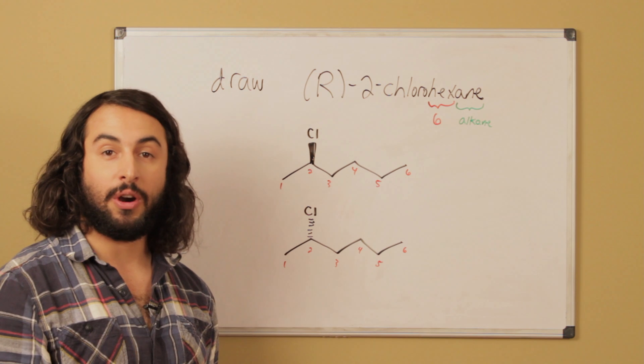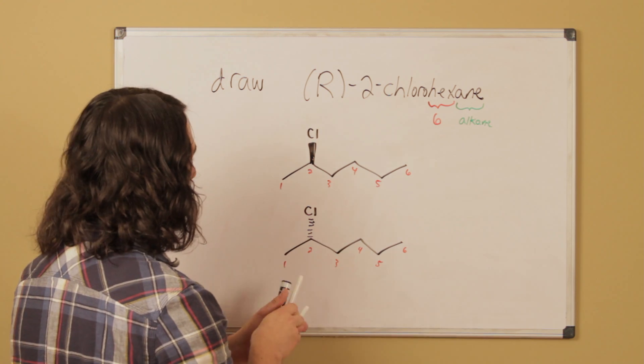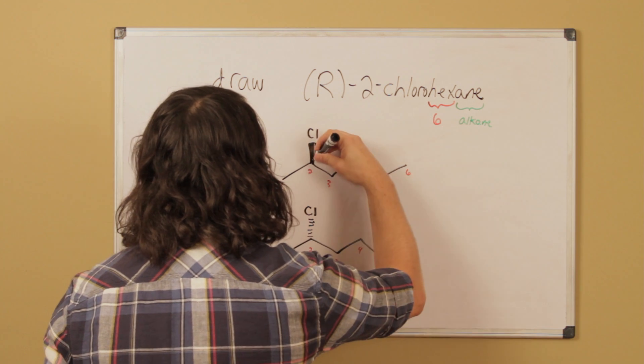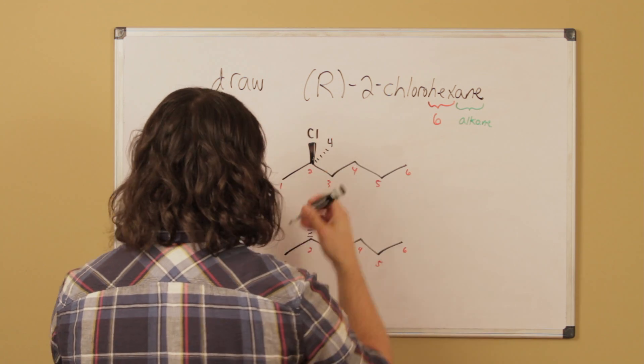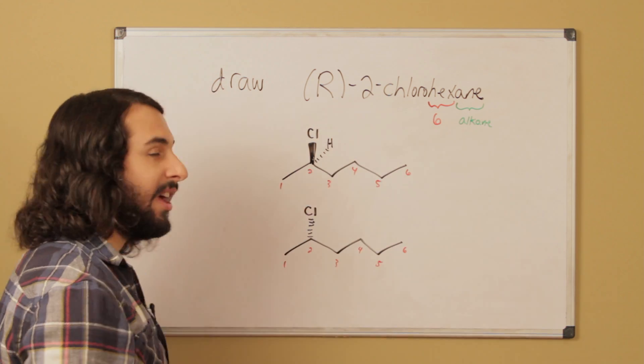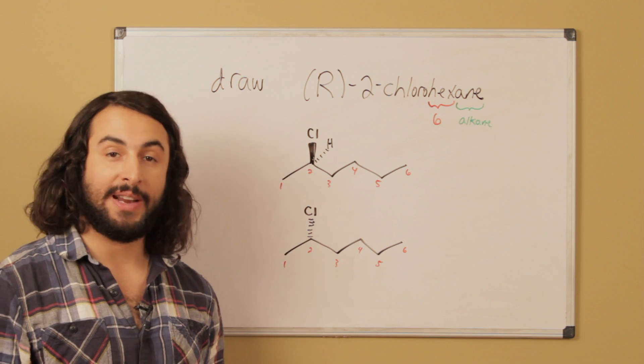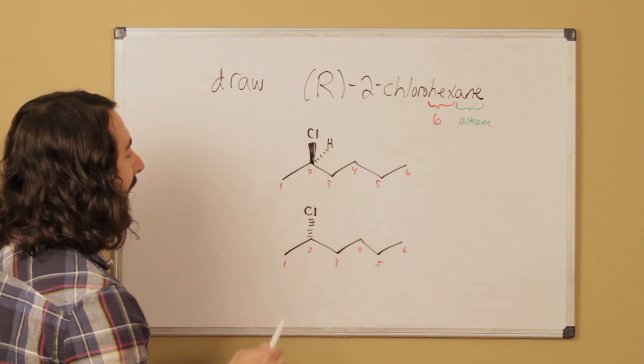Let's take a look here. What we want to be able to do by Cahn-Ingold-Prelog is assign the priorities of the four groups. Remember that Cahn-Ingold-Prelog goes by atomic mass and we go one carbon at a time.